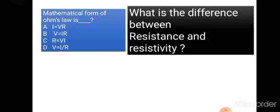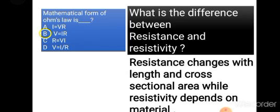The mathematical form of Ohm's law is V = IR. What is the difference between resistance and resistivity? Resistance changes with length and cross-sectional area, while resistivity does not depend upon length, cross-sectional area, temperature, or anything else — it just depends on the material.